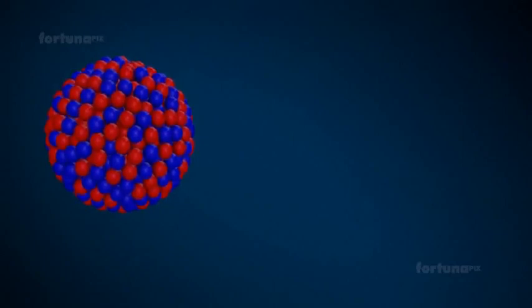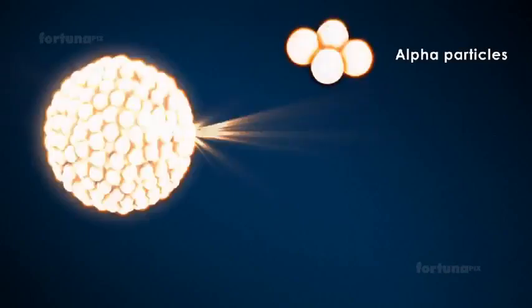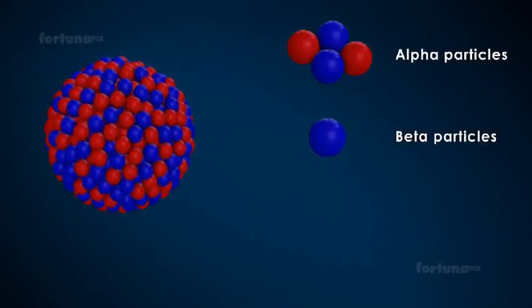Most naturally occurring radioactive elements will emit either alpha particles or beta particles during this process. However, the emission of these particles is often accompanied by the emission of gamma rays.